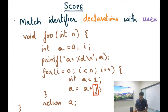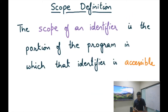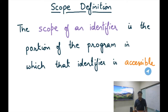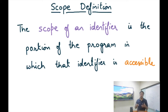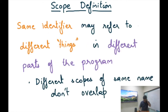The scope of an identifier is the portion of the program in which that identifier is accessible. For example, i is accessible throughout the function body after its declaration. Similarly, the inner a is accessible throughout the body of the for loop after its declaration.